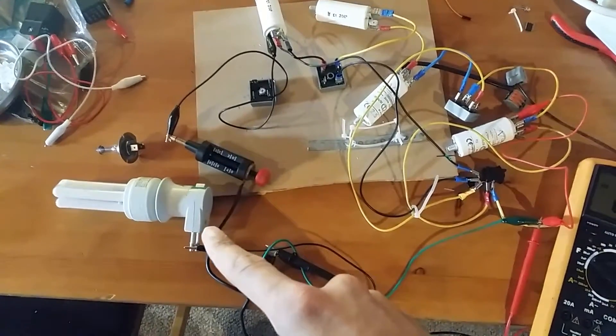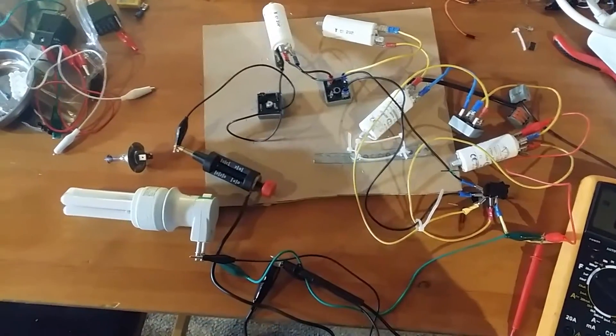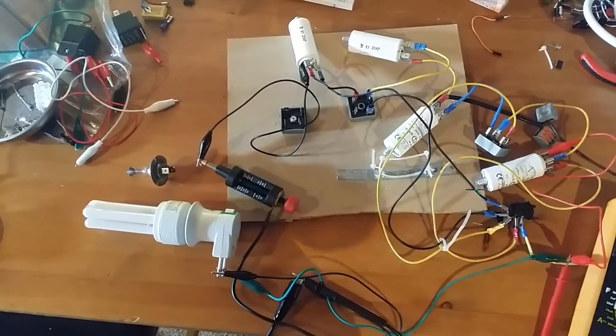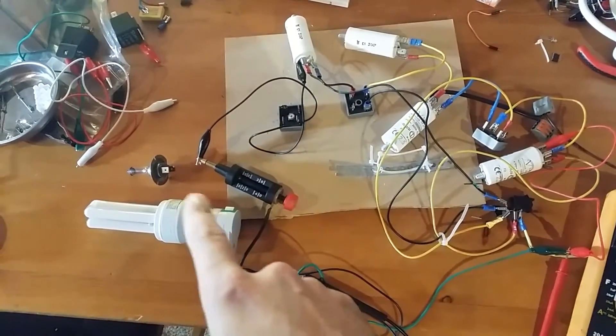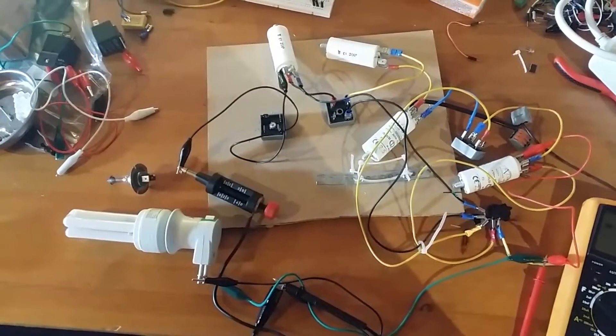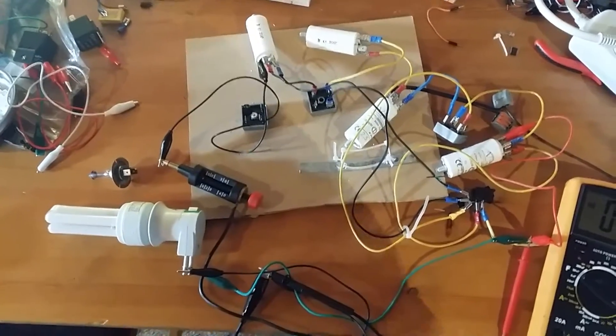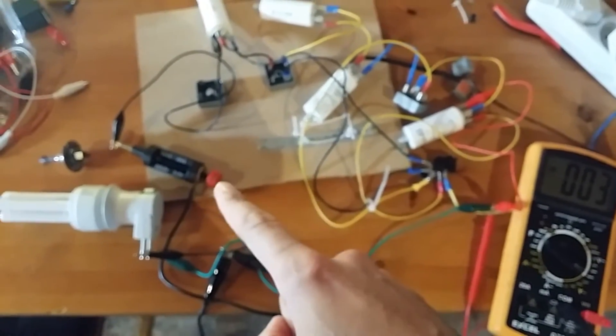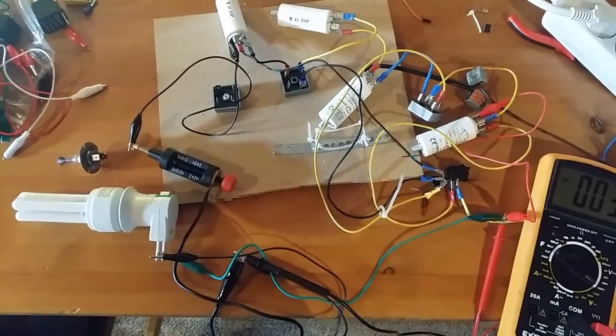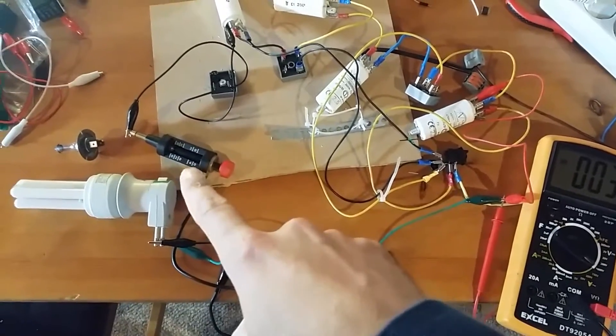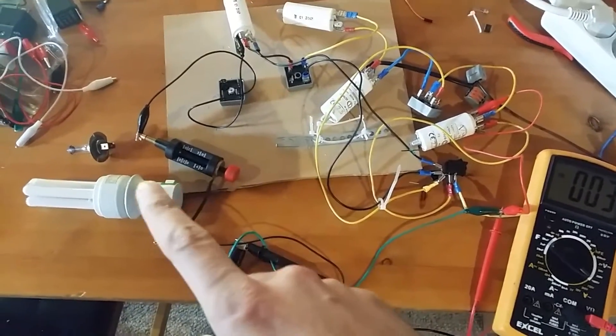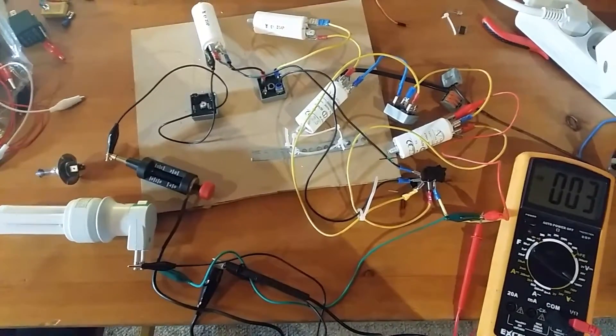We have here a 13-watt savings lamp, and there we have a 12-volt car bulb, 55 watts. We have a small spark gap there. We're not using it at this moment, but we'll use it later to make the 55-watt bulb work.